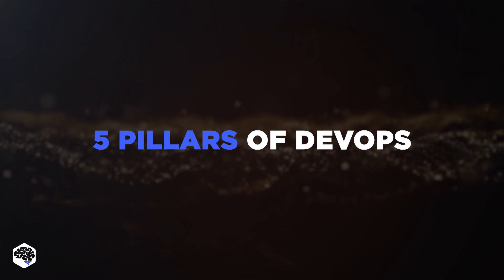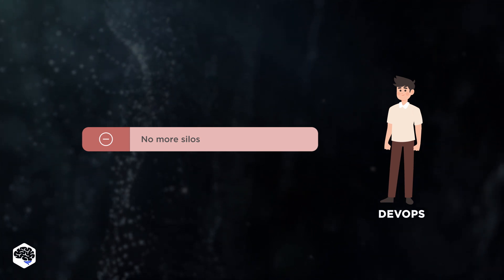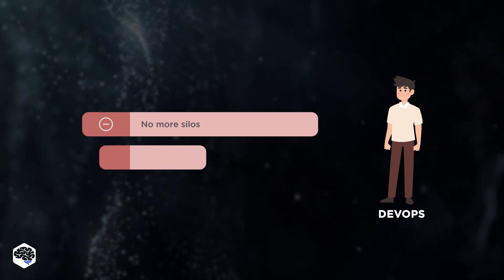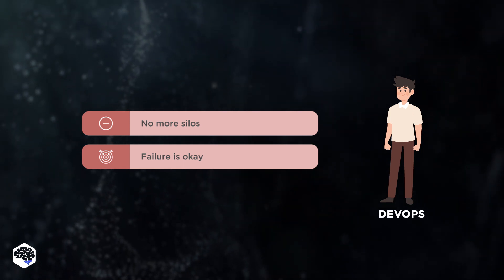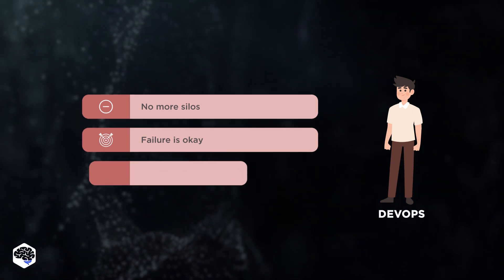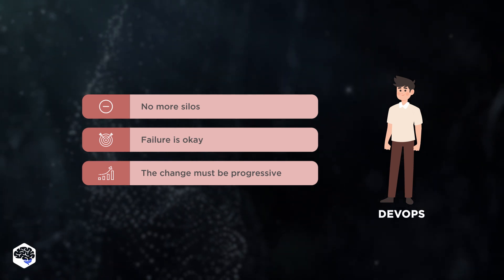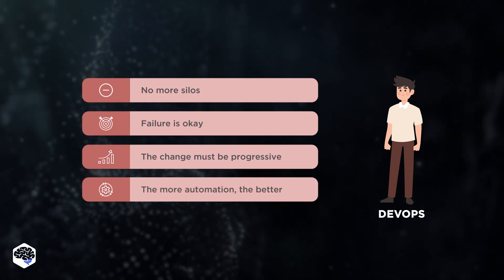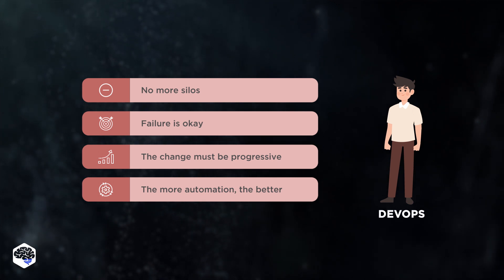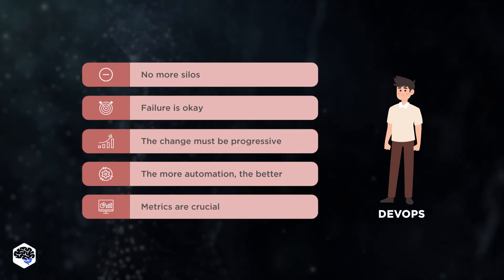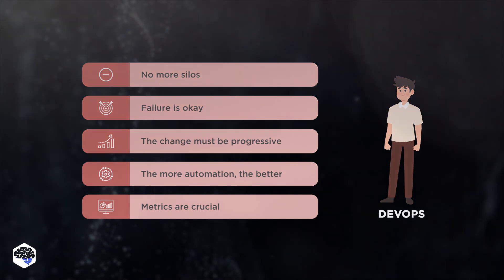There are five key pillars of DevOps: no more silos, as the absence of cooperation and information flow between teams decreases performance; failure is okay, as DevOps dictates learning from mistakes; the change must be progressive, as changes are most efficient and less risky when they are tiny and regular; the more automation the better, as DevOps concentrates on automation to provide upgrades faster; and metrics are crucial, as every change should be measured to see if it delivers the desired results.